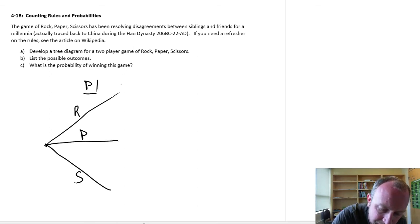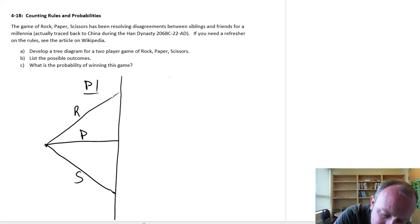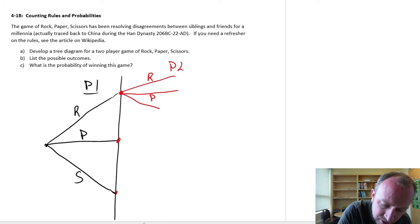Then, not based on what they're doing, because this is happening simultaneously, so while player one is choosing what they're going to play, player two is also choosing what they're going to play. And player two can choose either rock, paper, or scissors.